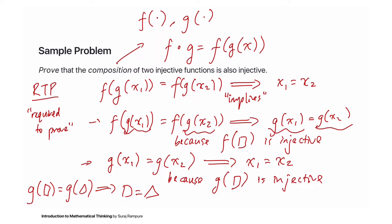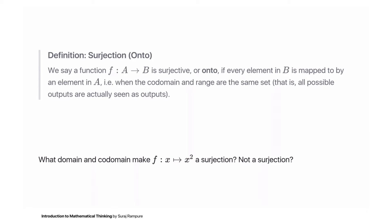If you're following this course at UC Berkeley, there's a homework problem very similar to this, but it asks you to prove that the composition of two surjective functions is also surjective. So what's a surjection? We say a function is a surjection, or onto, if every element in B is mapped to by some element in A.